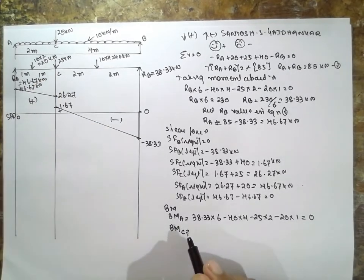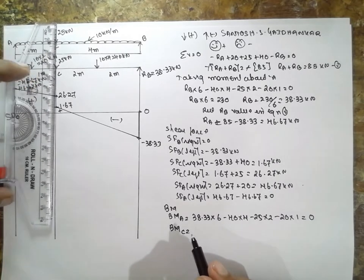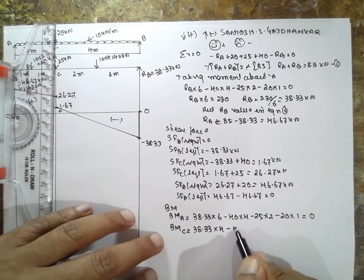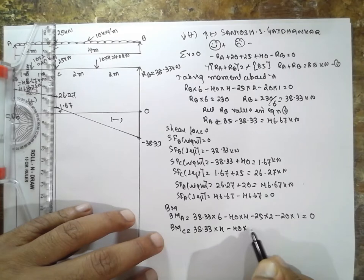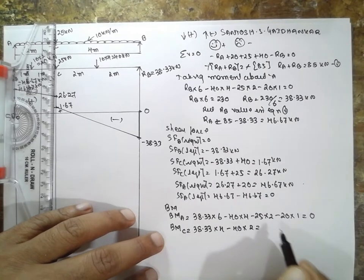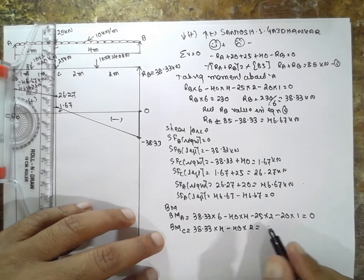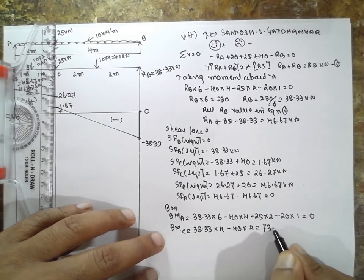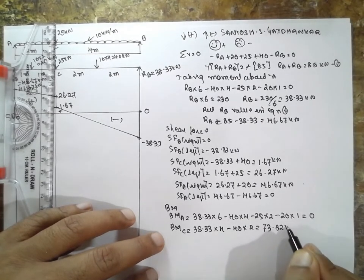Bending moment at C, that is 38.33 into 4 minus 40 into 2, that is 73.32 kilonewton meter.